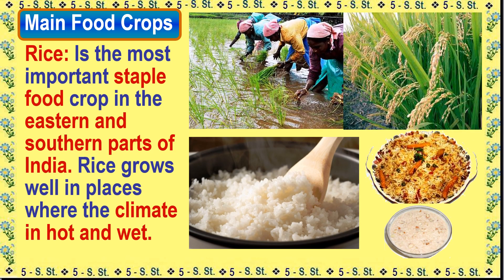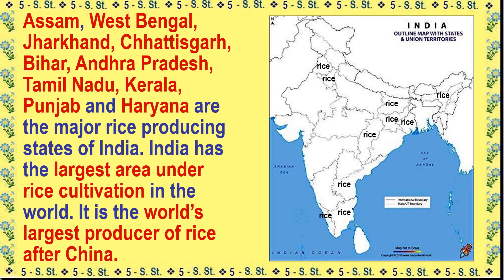Rice is the most important staple food crop in the eastern and southern parts of India. It grows well in places where the climate is hot and wet. Assam, West Bengal, Jharkhand, Chhattisgarh, Bihar, Andhra Pradesh, Tamil Nadu, Kerala, Punjab, and Haryana are the major rice producing states. India has the largest area under rice cultivation in the world and is the world's largest producer of rice after China.